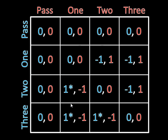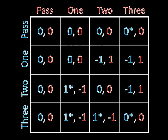Moving to the next strategy — if player two sends out three units, then if player one passes he gets zero, if he sends out one or two units he loses, and if he sends out three units he draws. So the zeros are the best responses here, because they're the highest utilities available to player one if player two chooses three units. The zeros get the asterisks. And lastly, we consider player two's pass move. In this case, player one is indifferent between all four of his strategies — he earns zero regardless of what he chooses, so all four of those are best responses.